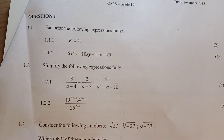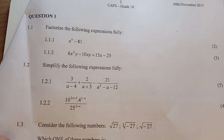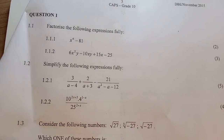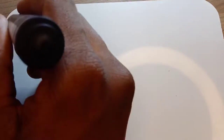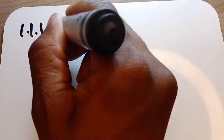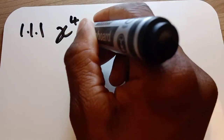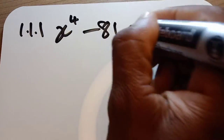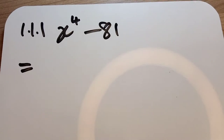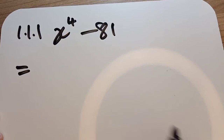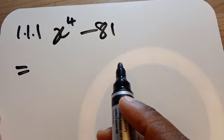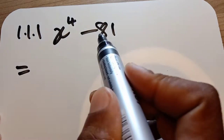Hello guys, we are on 1.1. 1.1 is to vectorize the following expressions fully. We are having 1.1.1 — let's start with it. We are having 1.1.1 as x to the exponent 4 subtracting 81. We have to vectorize it. When we check the nature of our expression: